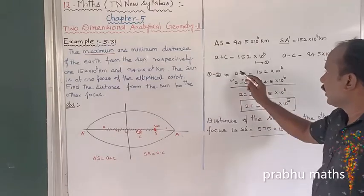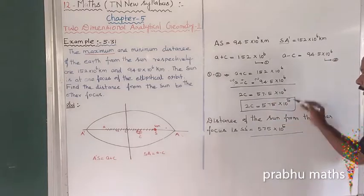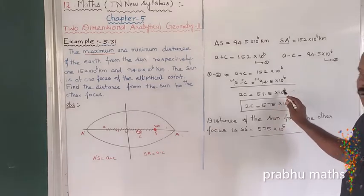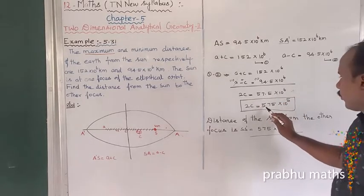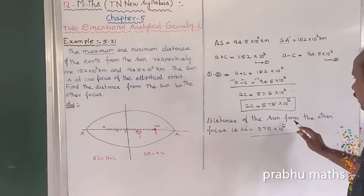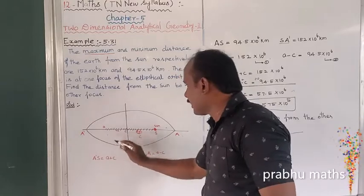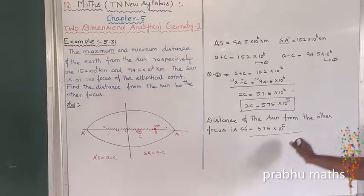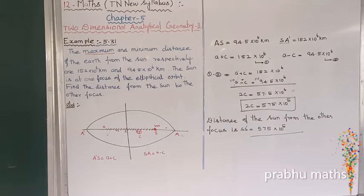Subtracting the second equation from the first: the a terms cancel, giving 2c = 152 − 94.5 = 57.5×10⁶ km. Therefore 2c = 57.5×10⁶ = 575×10⁵ km. The distance from the Sun to the other focus, SS', is 575×10⁵ km.